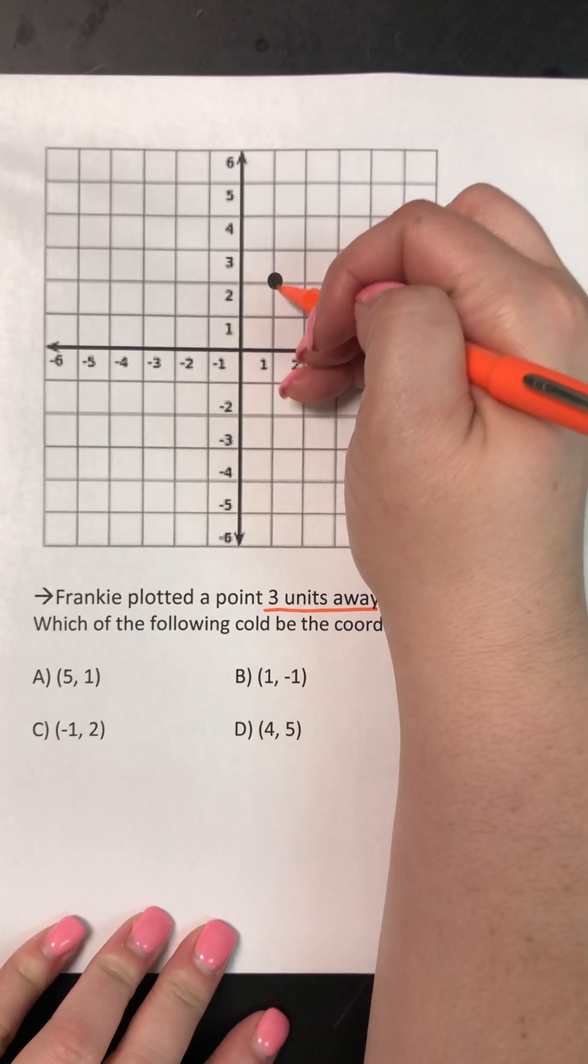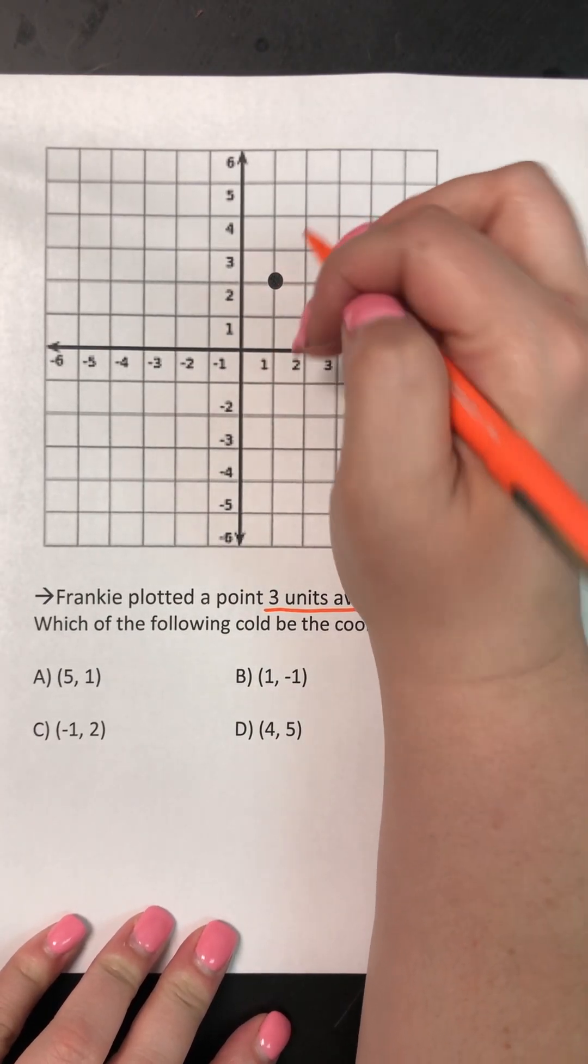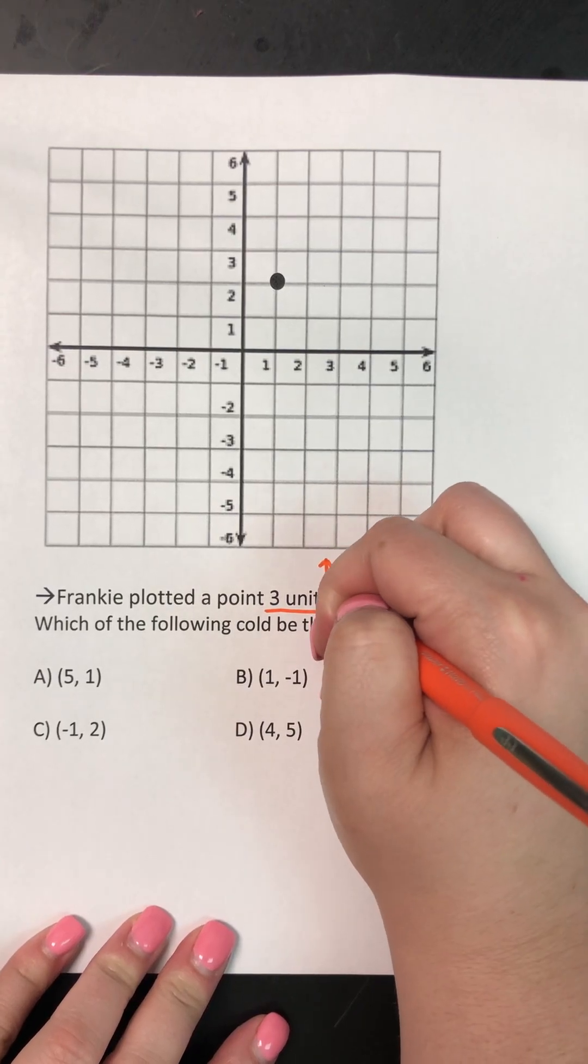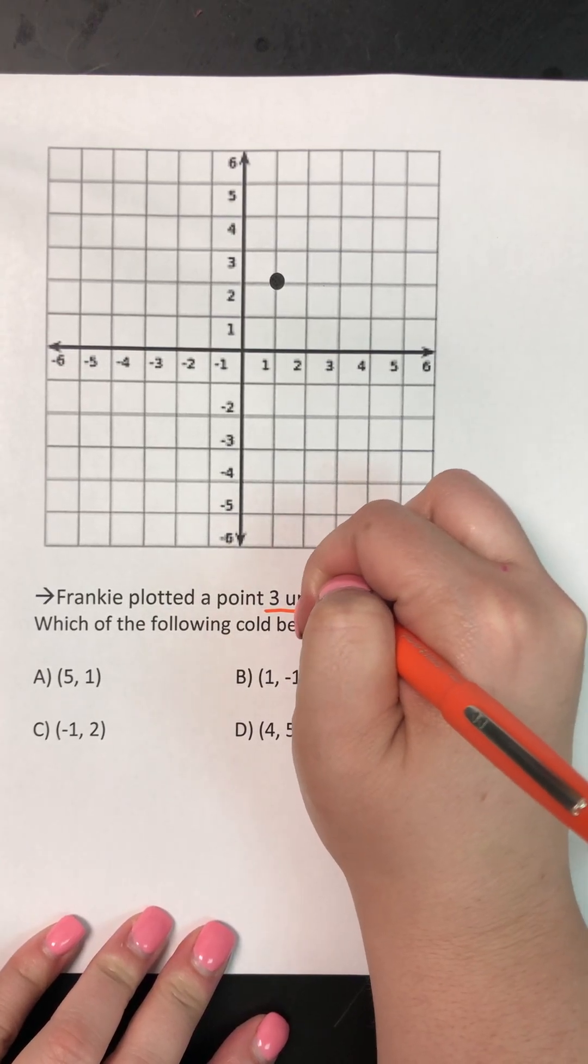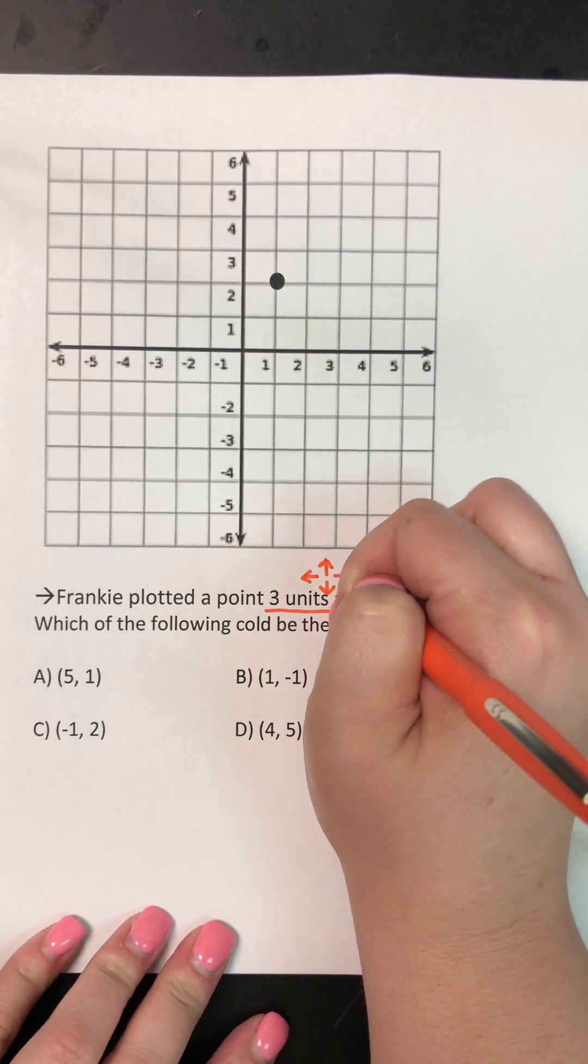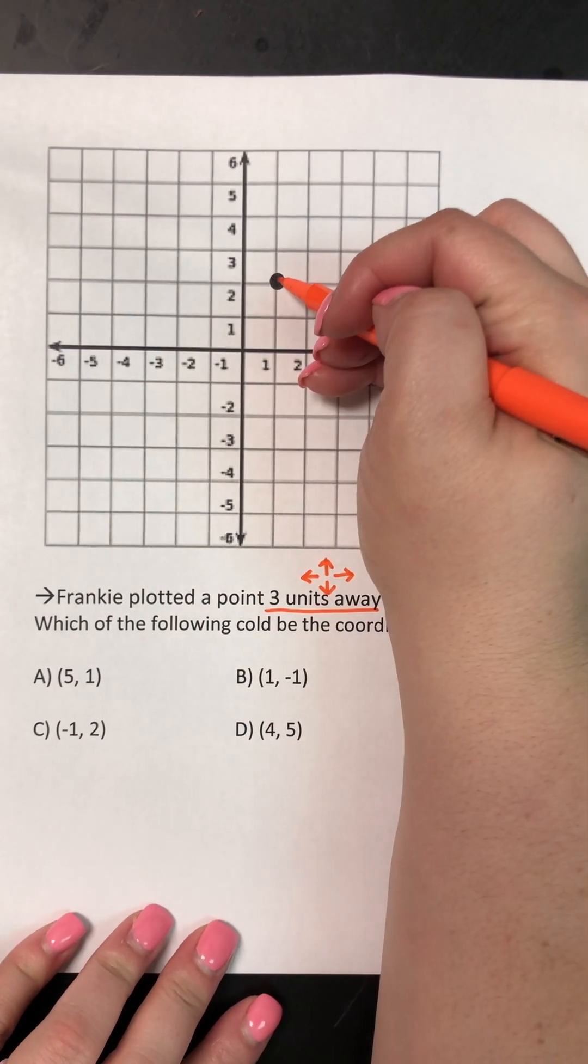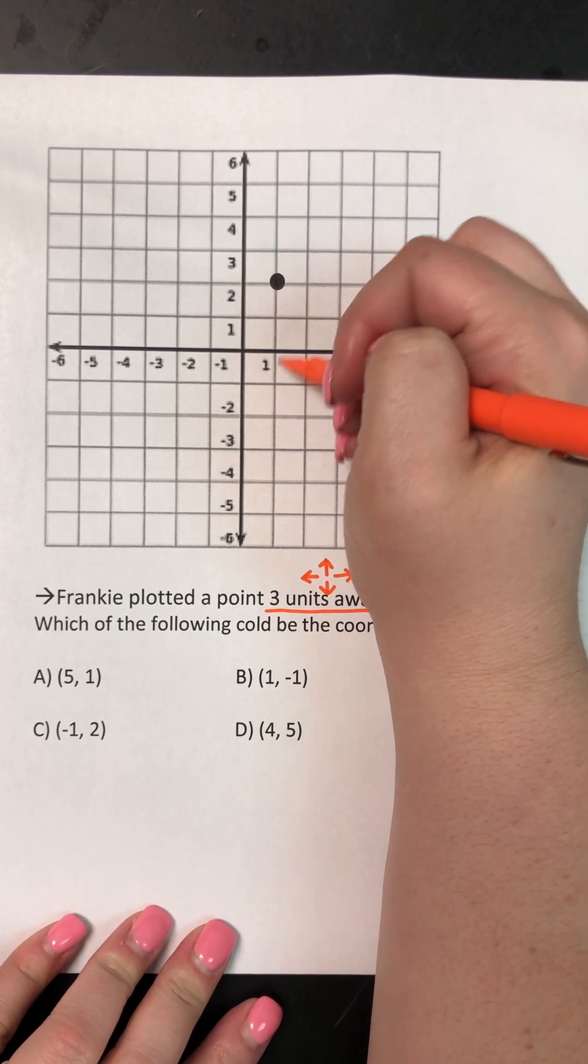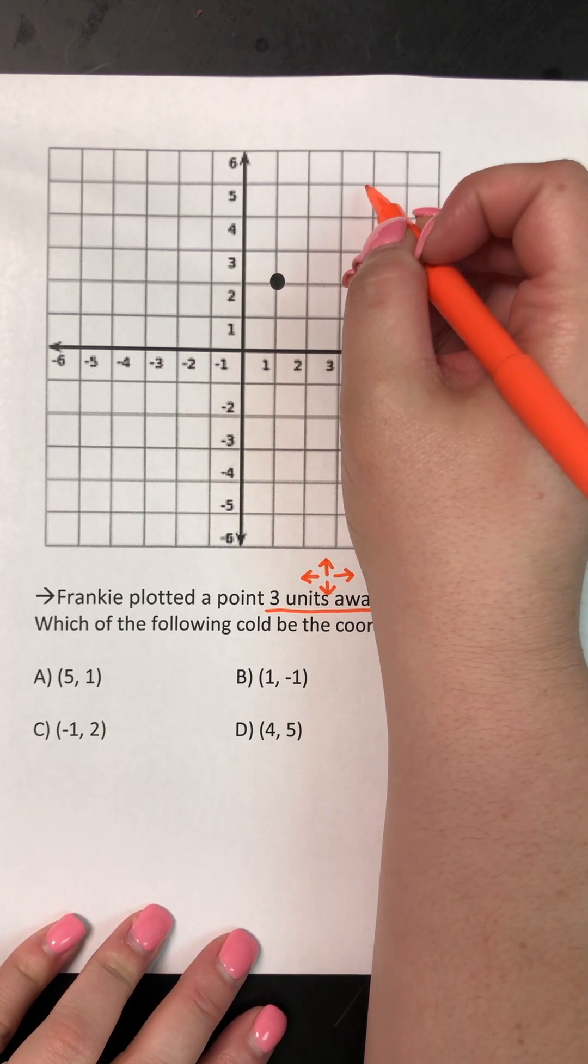So when you're moving away from a point, we can only move on our grid lines. So we could move straight up, we could move straight down, we could move straight left, or we can move straight right. Okay, we're gonna pretend like these are streets. We can only drive on our streets. We cannot go at a diagonal.